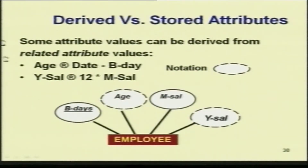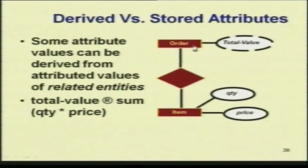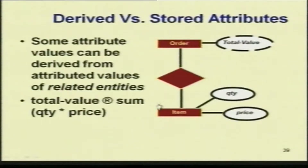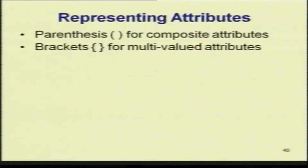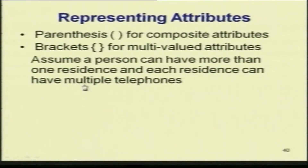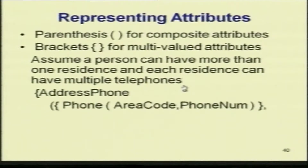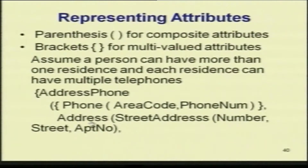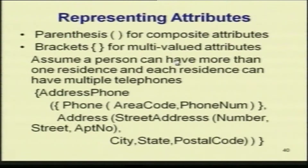For example, I have an item with quantity and price related to an order. The order's total value is actually the sum of quantity times price of all the items. So this total value is a derived attribute whose value is derived from attribute values of another entity to which this entity is connected. Just to summarize: parentheses are used for composite attributes, brackets for multivalued. For example, a person can have more than one residence, each with multiple telephones — showing both composite and multivalued notations.